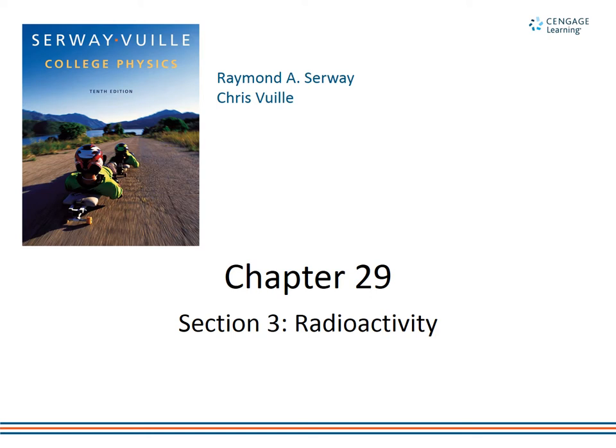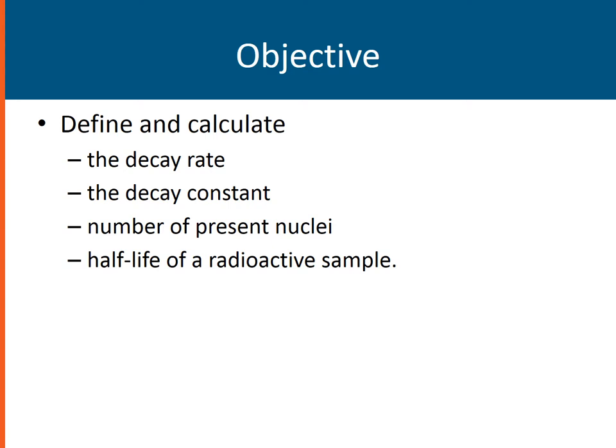This tutorial is on Chapter 29, Section 3, Radioactivity. Atoms undergo radioactive decay to become stable. In this lesson, we are going to look into the mathematical part of radioactivity.